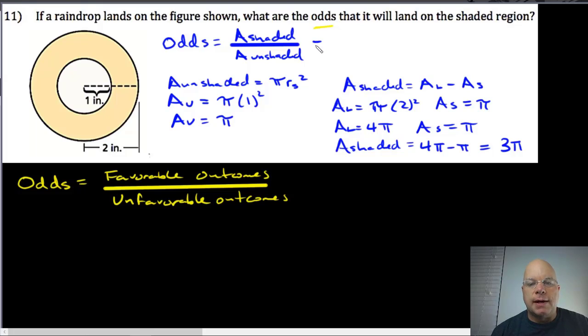If we substitute that into our odds, our ratio for odds, we have 3π over π or 1π. And the π's cancel.